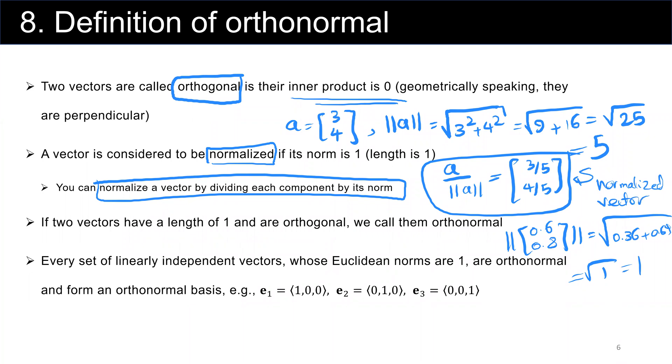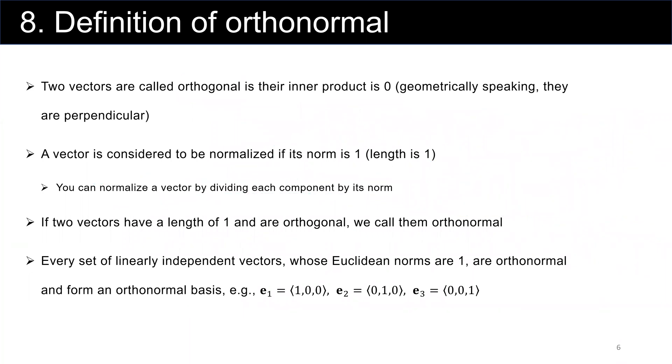Now we go to our main definition: orthonormal. If two vectors have length of one, which means they are normalized, and they are orthogonal, then we call them orthonormal.